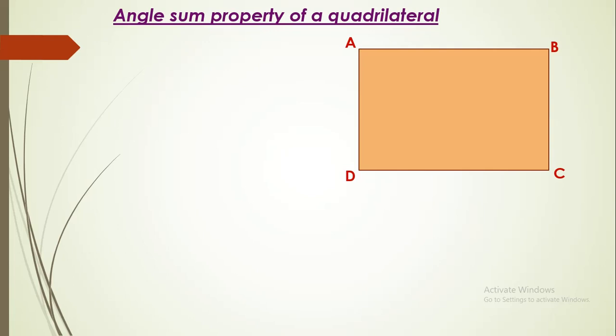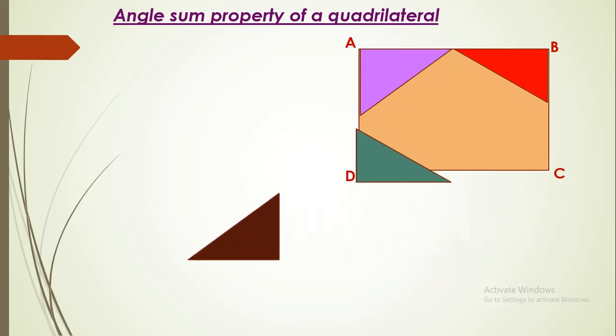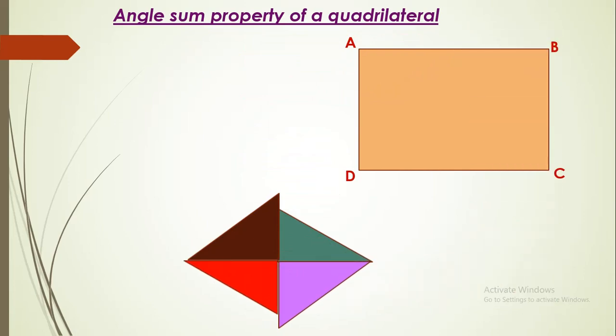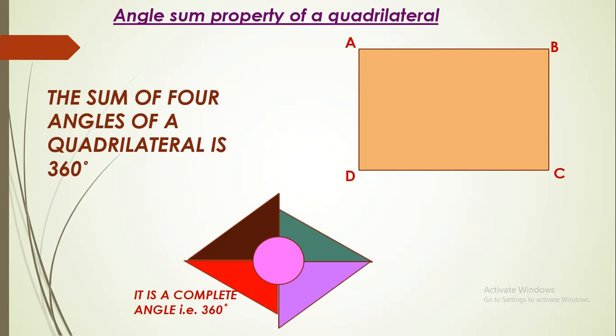Next, we have angles and the property of a quadrilateral. Let us take a quadrilateral and cut the four corners of it — 1, 2, 3, 4. Now I place them one beside the other — 1, 2, 3, 4. We observe that the four angles when placed adjacent to each other form a complete angle, that is 360 degrees. So the sum of four angles of a quadrilateral is 360 degrees.